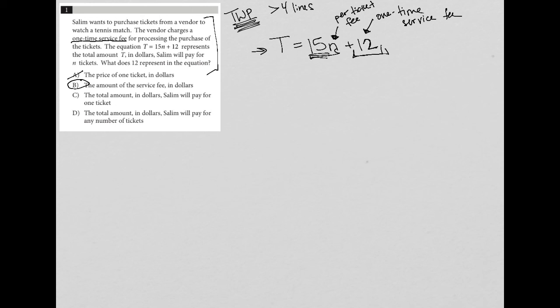C, the total amount in dollars Salim will pay for one ticket. Nope, that's what T represents. And in fact, that's what T represents if N is equal to one. So C is definitely not correct.